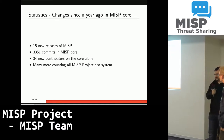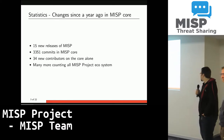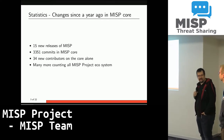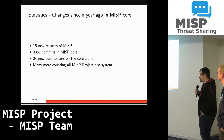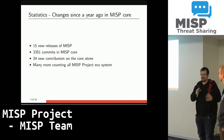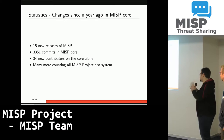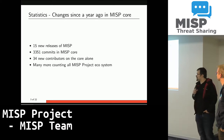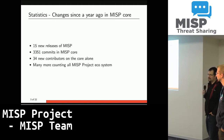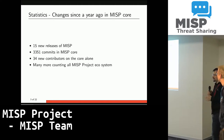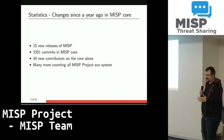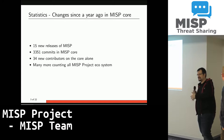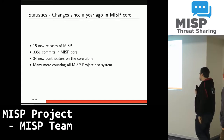The number of contributors to the core has grown by 34 — we're currently at around 130 overall. These are just the numbers for the MISP core software, not touching on galaxies, taxonomies, and so on. If you counted those, the numbers would be much higher, because the people contributing to the software part are not necessarily the same people contributing to the galaxies and taxonomy definitions.